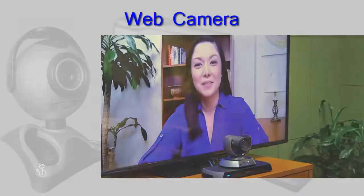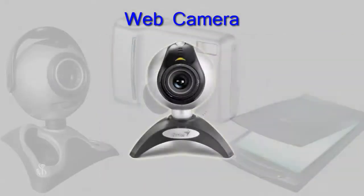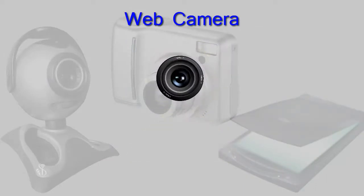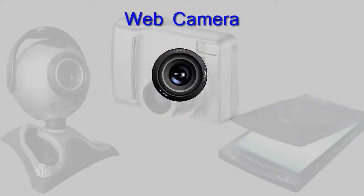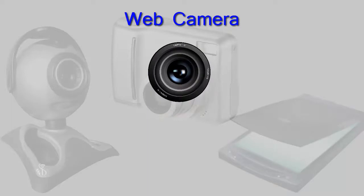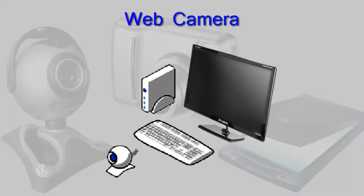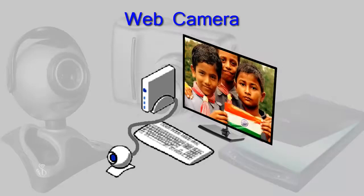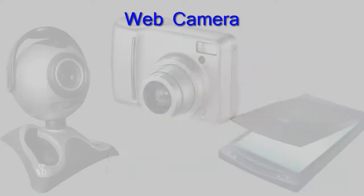A web camera is an input device. There is a small lens inside it. This lens captures whatever is in front of it and transfers it through a cable in digital form to the computer. Whatever is captured can be seen on the monitor screen like an image.